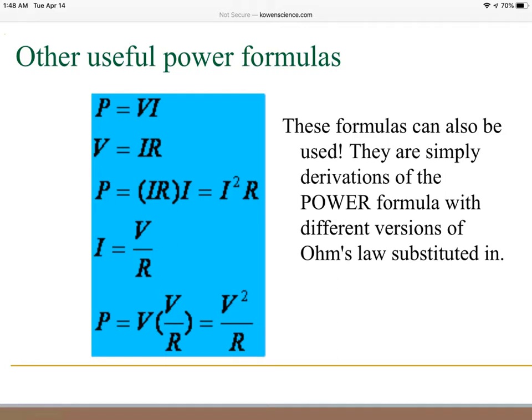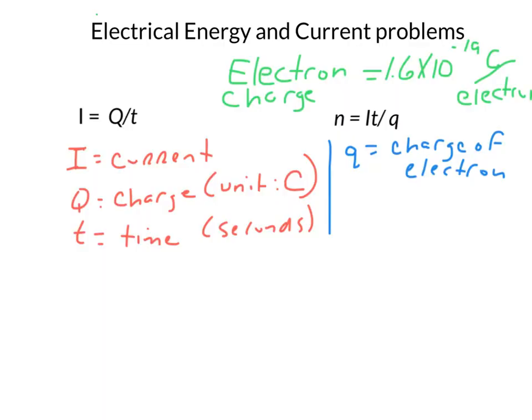The next section covers how to approach and solve the electrical energy and current problems 1 through 6 on homework assignment number 2. Electrical energy is the ability of an electrical circuit to produce work by creating an action. Remember from school that the law of conservation of energy states that energy cannot be created or destroyed, but it can change form. Electrical energy is very versatile as it can be easily converted into many other forms.